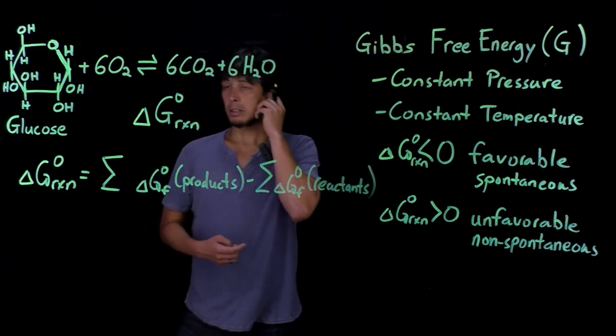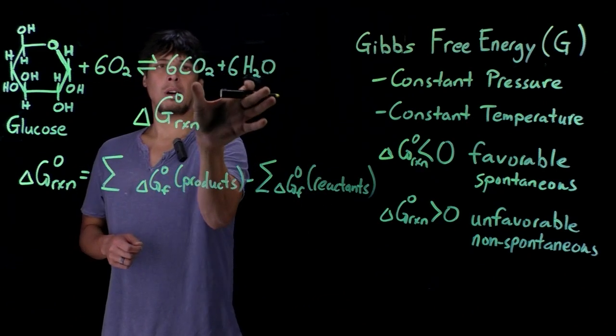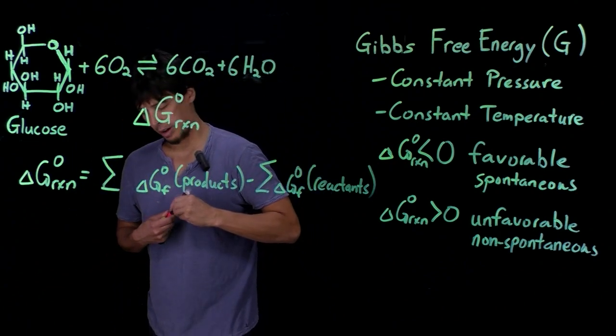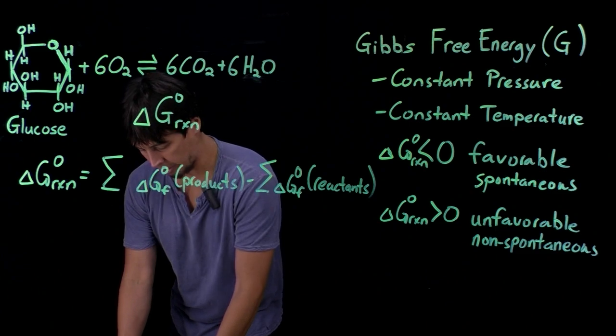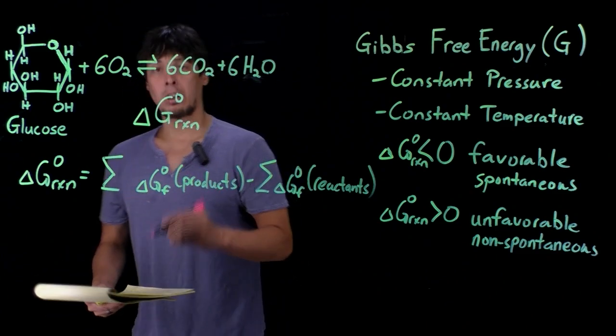In practice, what this looks like for this balanced equation is that the products are carbon dioxide and water, and we need to extract the free energies of formation for each of these. So for carbon dioxide,